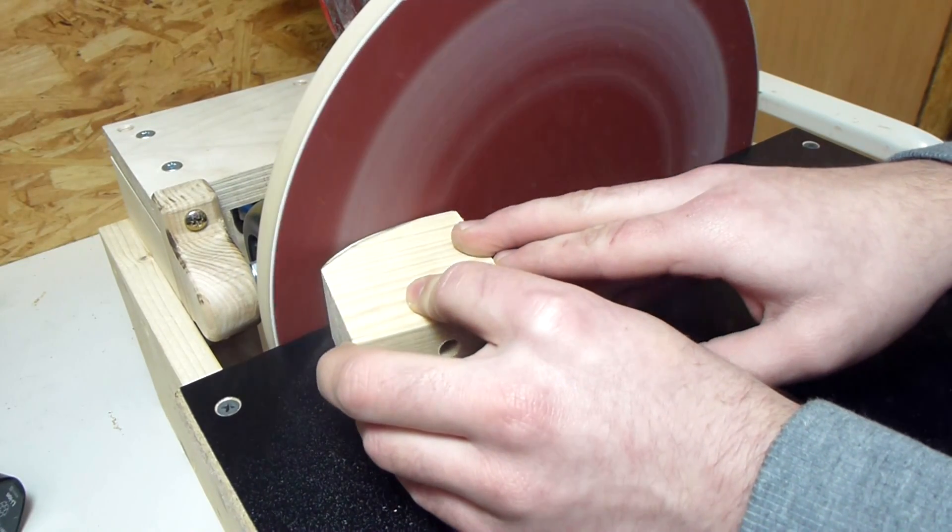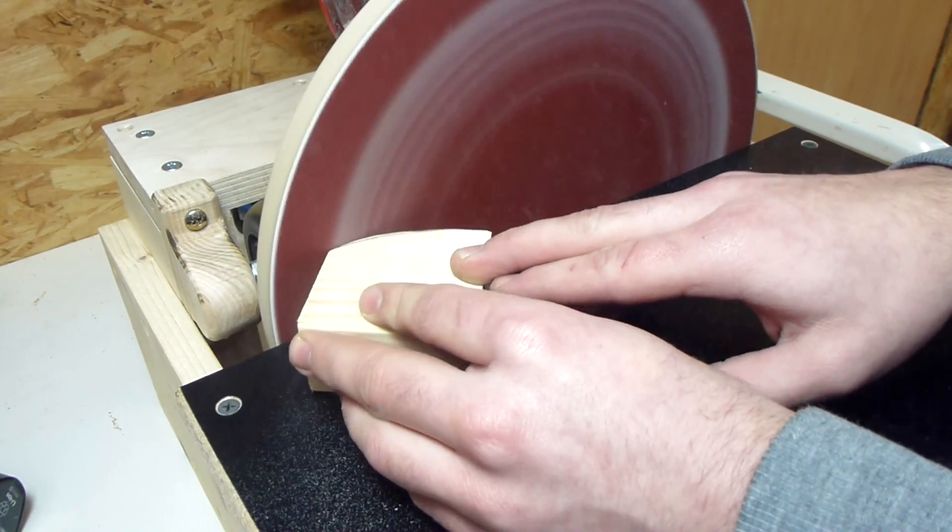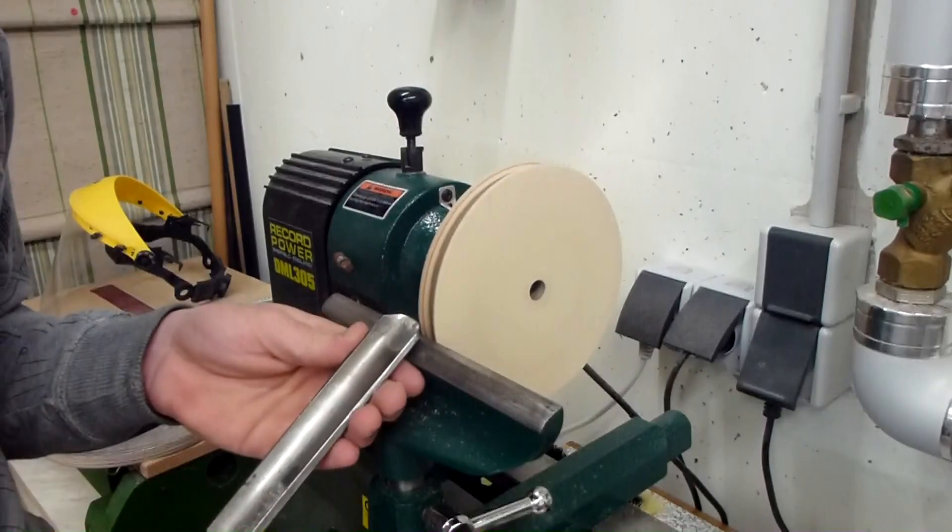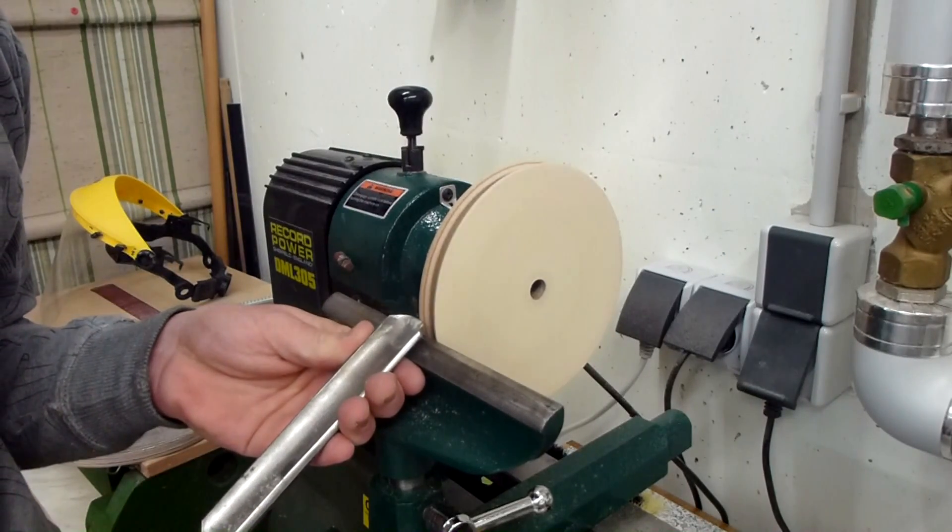Right now the disc spins at about 1400 RPM, but I want it a little bit higher, about 1700, so in order to do that I need to change the pulley ratio.